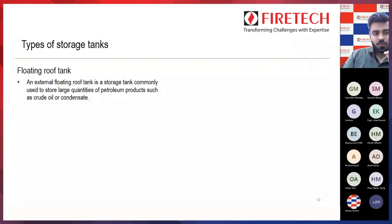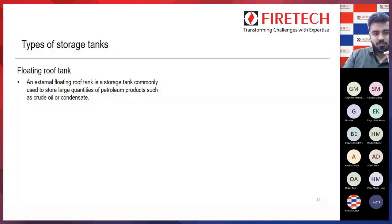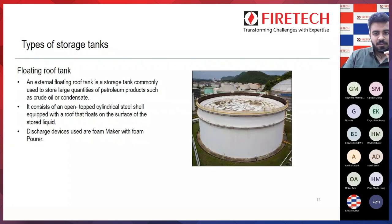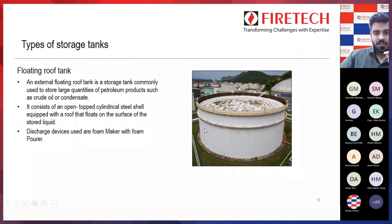Another type is the external floating roof tank. This has an open top and a floating roof which keeps on floating as the liquid inside the storage tank decreases. For this type, the discharge devices are foam maker with foam pourer.